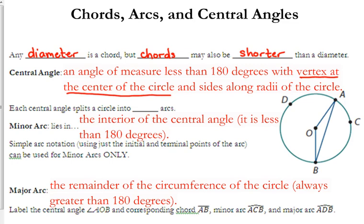For example, a central angle here would be angle AOB. AOB would be the central angle. O is the center of the circle, so the vertex of that angle is the center of the circle, and OA and OB are radii of the circle.